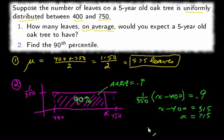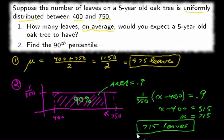So 90% of 5-year-old oak trees will have less than or equal to 715 leaves. That is the 90th percentile.